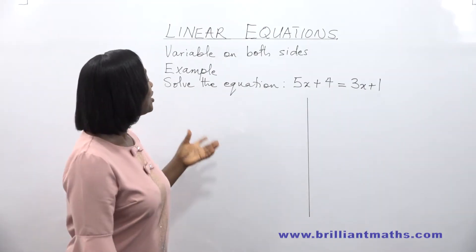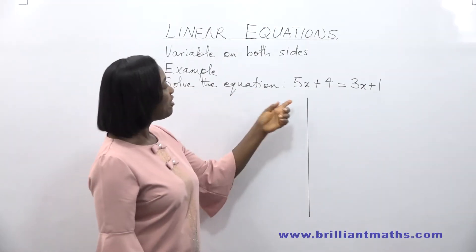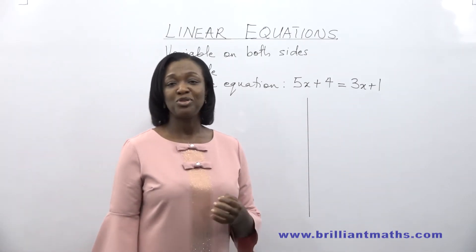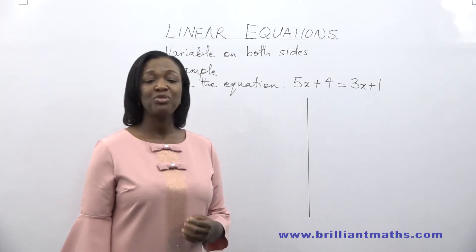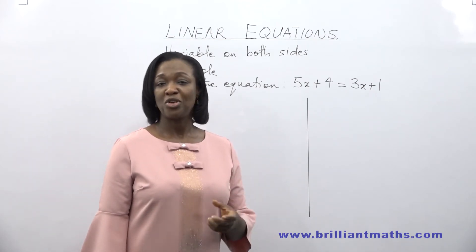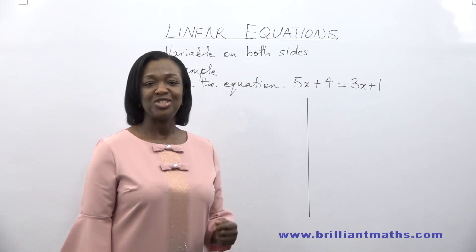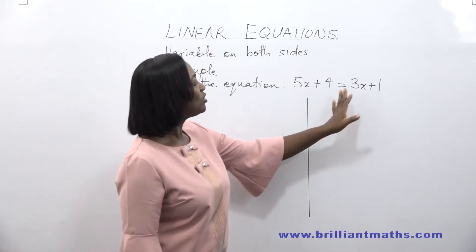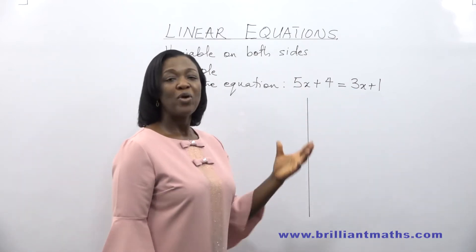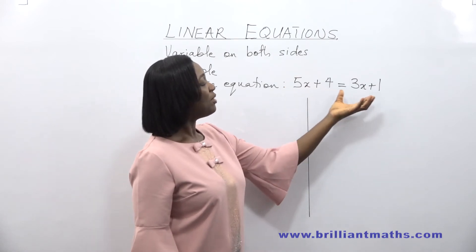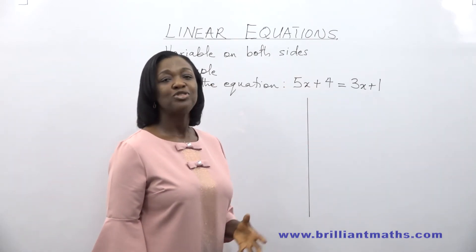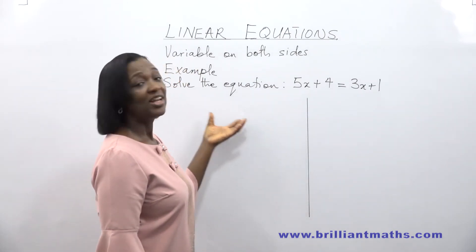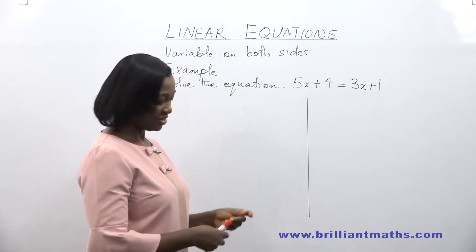In this example, we want to solve an equation with the variable on both sides of the equation. This lesson can be found in Brilliant Maths Module 3. If you don't have Brilliant Maths Module 3, subscribe at BrilliantMaths.com. Grab it and let's do this. Solve the equation 5x plus 4 is equal to 3x plus 1.